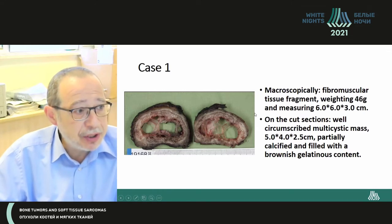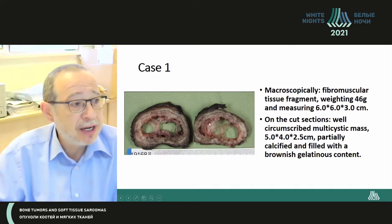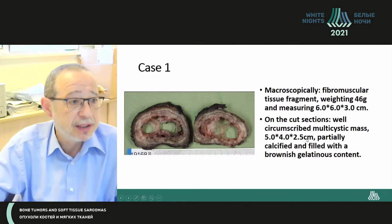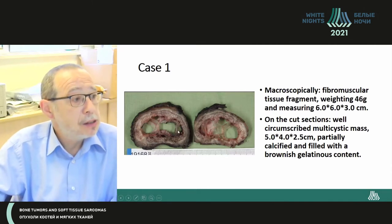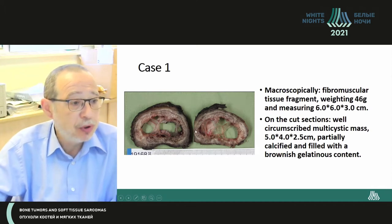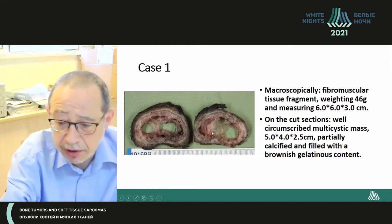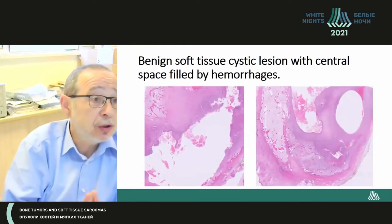We performed a resection. Microscopically, you can see fibromuscular tissue with cystic formations inside with certain fragments. The weight is almost 50 grams and it is 60 by 60 centimeters. The cystic cavities were filled with brownish, yellowish fluid.